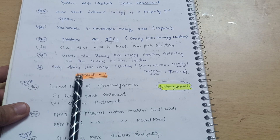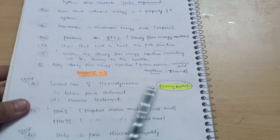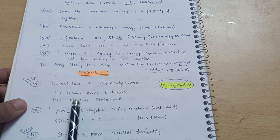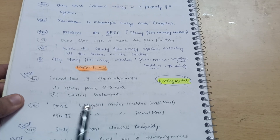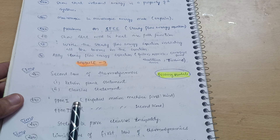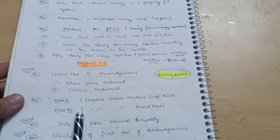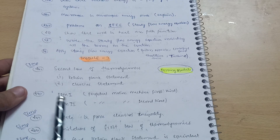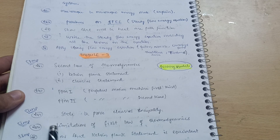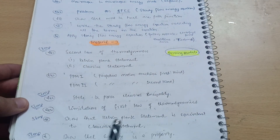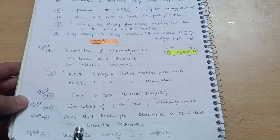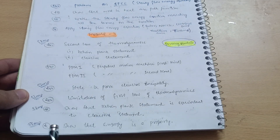Module 3 is again a passing module. You have to cover the Second Law of Thermodynamics, which consists of two statements: the Kelvin-Planck statement and the Clausius statement. Next are definitions of the Perpetual Motion Machine of the First Kind and Perpetual Motion Machine of the Second Kind. A super important question is: state and prove the Clausius inequality and the limitations of the First Law of Thermodynamics. Next super important: show that the Kelvin-Planck statement is equivalent to the Clausius statement.